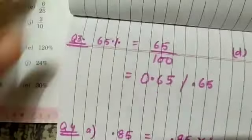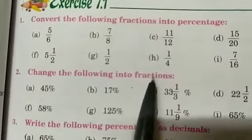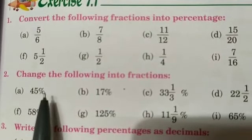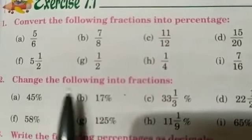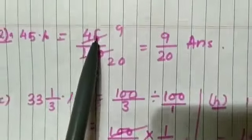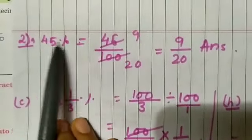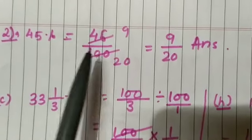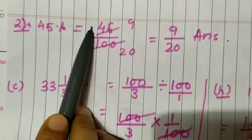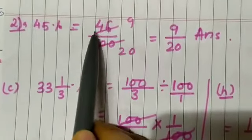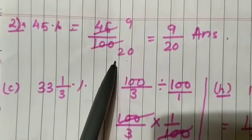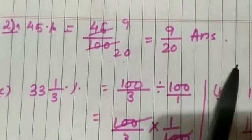Question number 2: change the following into fractions. These digits are written in percentage, so we have to convert the percentage into fraction by dividing with 100. So 45 percent equals 45 by 100. We simplify by dividing by 5: 9 times 45 and 20 times 100 gives 9 by 20. So 9 by 20 is the answer.